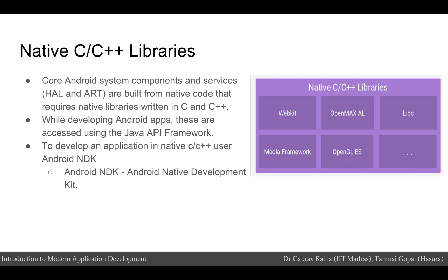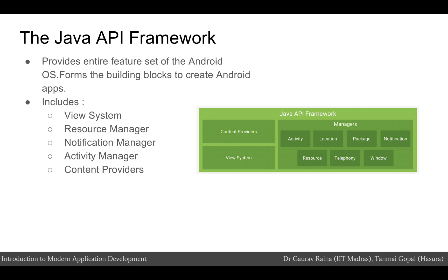Next comes the Java API Framework. The Java APIs provide you with the entire feature set of the Android OS. These APIs form the building blocks you need to create Android apps by simplifying the reuse of core, modular system components and services. The Java APIs include a view system which can be used to build the UI — including lists, grids, text boxes, buttons, etc. It also includes a resource manager which provides access to non-code resources such as localized strings, graphics, and layout files.